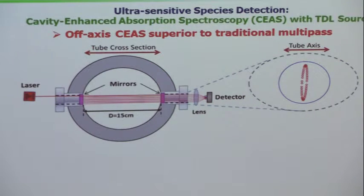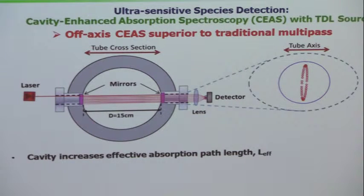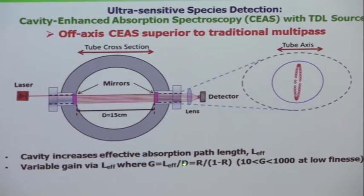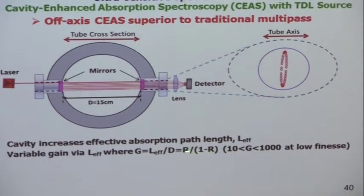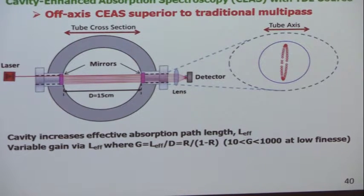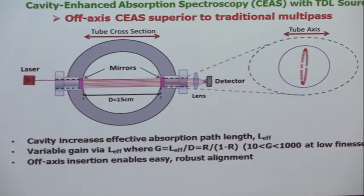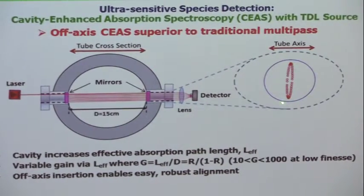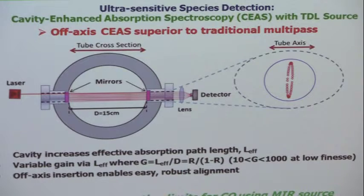This idea increases the effective path length. The effective length over the original diameter scales as R/(1−R), where R is reflectivity near 1 — basically 1/(1−R). If you make R = 0.99, you get a factor of 100 gain. That's a concept that avoids beam-steering problems in multipath. We use off-axis insertion so the beam traces out this ellipse. It works amazingly well. We've just done this recently — first with acetylene, then methane, and now CO on the fundamental band.